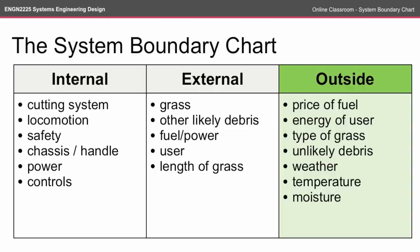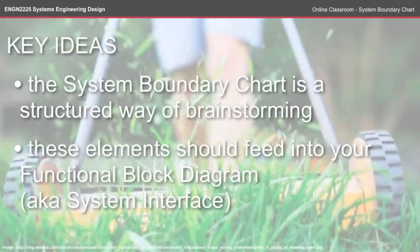By actually listing these things, it's making that very explicit. There we have it — a completed System Boundary Chart with our internal, external, and outside-the-scope categories. Notice some things are at different scales: the cutting system is made up of a number of different components, whereas grass is unlikely to be. The key idea is that the System Boundary Chart is a structured way of brainstorming what should be where in your system, and these elements directly feed into your functional block diagram, also known as the system interface, which will be the topic of the next online classroom.